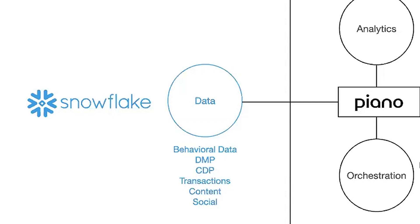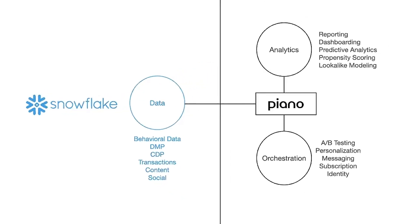We also have DMP data — segmentation we do on customers — CDP data, which includes answers to questions asked on websites or data clients upload from their customer records, and transactional data because we manage subscriptions for many customers around the world. We index all the content end users read across sites to see what they're interested in, and we're also a leading organic and paid social media hosting company. All of that data goes into Snowflake and powers the analytics and targeting applications we've built on top of it, including a no-code rules engine that enables clients to orchestrate actions within Piano or other systems.